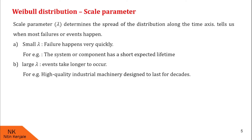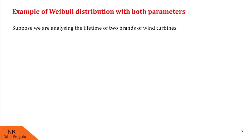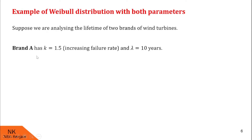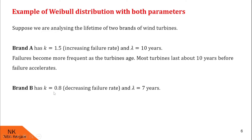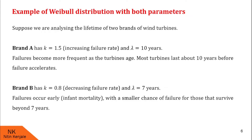Now we will understand both parameters with the help of an example. Suppose we are analyzing the lifetime of two brands of wind turbines. Brand A has k equal to 1.5; since it is greater than 1, its failure rate is increasing. The scale parameter lambda is 10 years. Brand B has k equal to 0.8; since it is less than 1, its failure rate is decreasing. The scale parameter is 7 years, meaning failures occur early — also called infant mortality — with a smaller chance of failure for those that survive beyond 7 years.